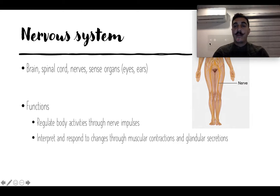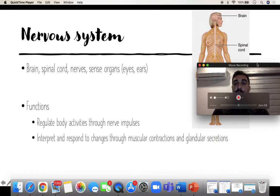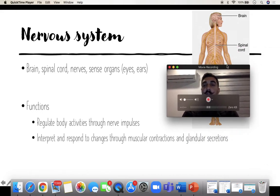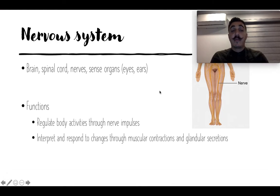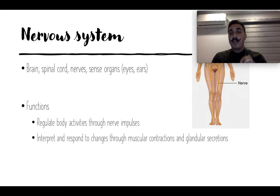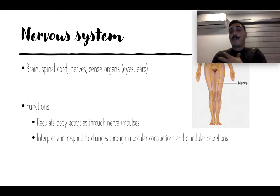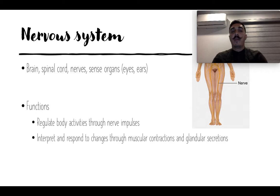The nervous system is basically the brain, the spinal cord, the nerves around them, and some sense organs like the eyes and ears. They're really the brains of the organism, literally. They serve to regulate body activities through nerve impulses and can interpret and respond to changes in our environment — from outside or inside. The brain, sending signals through the spinal cord, responds to changes to protect our bodies and make sure everything's working correctly.